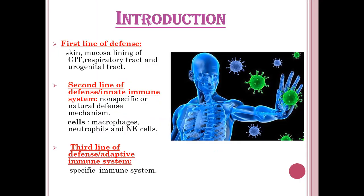The first line of defense in the human body consists of the skin, mucosal lining of the GIT, respiratory tract, and urogenital tract. The second line of defense is the innate immune system, which is a non-specific or natural defense mechanism.